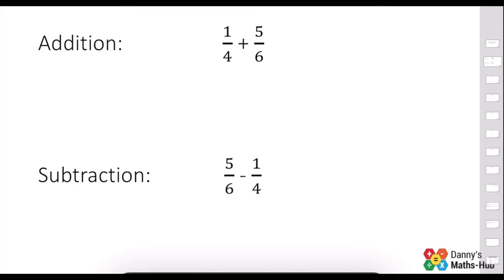So let's take a look at these first two questions: 1 quarter plus 5 sixths. The denominators are not the same, so we cannot simply add these together.